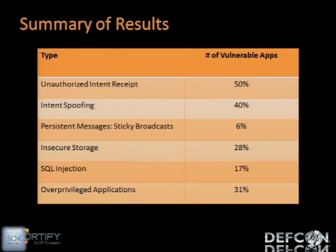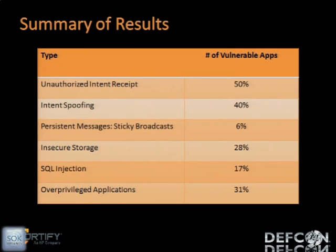A few words about empirical results. Now that we talked about the seven security mistakes, you're probably wondering if these mistakes actually happen in real applications. This table should convince you that they are indeed real. We looked at a bunch of different applications, scanned them with multiple tools, and did some manual investigation. Unauthorized intent receipt happens in 50% of applications we looked at. Intent spoofing happens in 40%. Sticky broadcasts were seen in 6% of applications. 28% of applications write some sort of sensitive data to the SD card through insecure storage. 17% have SQL or query string injection. And 31% of all applications we looked at turned out to be overprivileged.